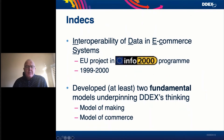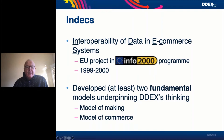In comes the INDEX project — Interoperability of Data in E-Commerce Systems. It was an EU project coming out of what was called the INFO 2000 program, taking place across the millennium between 1999 and 2000, and it developed at least two very fundamental models that underpin the way in which we approach the development of the DDEX standards. These two things are known as the model of making and the model of commerce. At this point I'm going to hand over to Niels, who will describe these in more detail.